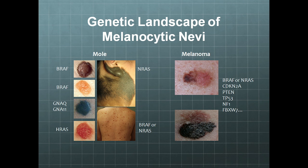We have learned through lots of next-gen sequencing studies about the major genetic drivers within these nevi and melanomas. Some very standard common acquired nevi — compound, intradermal, or junctional — and the majority, about 89% or so, have a BRAF-activating mutation, most of them BRAF V600E mutations.